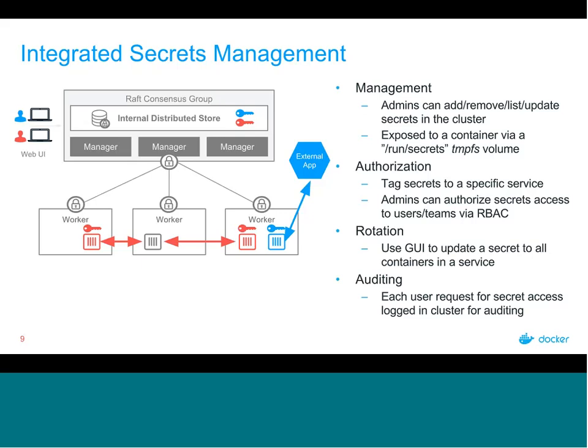With Docker Data Center, admins can authorize via role-based access control which users and teams have access to a secret, using the same label-based mechanism as across other parts of the product. Using the GUI, you can quickly rotate and update secrets to all containers in a service by editing and replacing the secret. You can also audit requests using the syslog feature built into UCP — sending logging data to something like an ELK stack — to see which users requested or were given secret access.